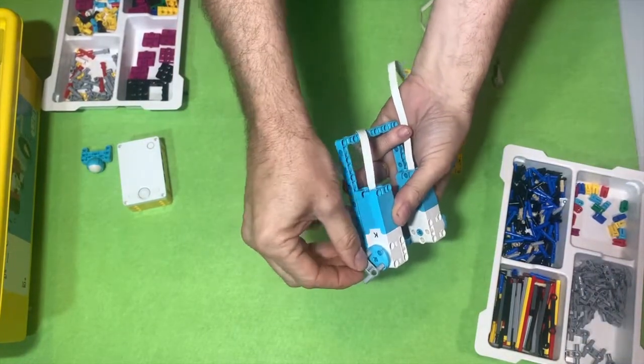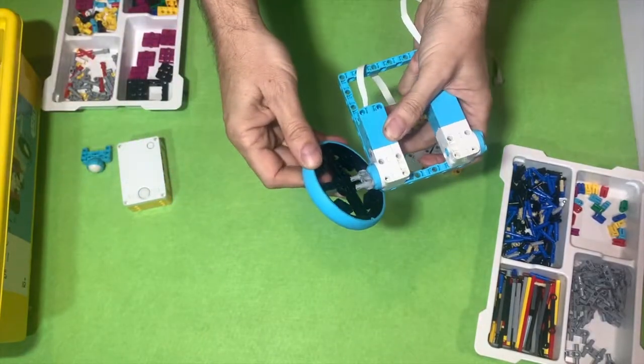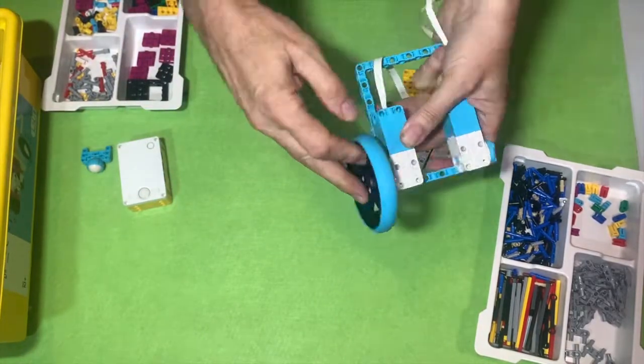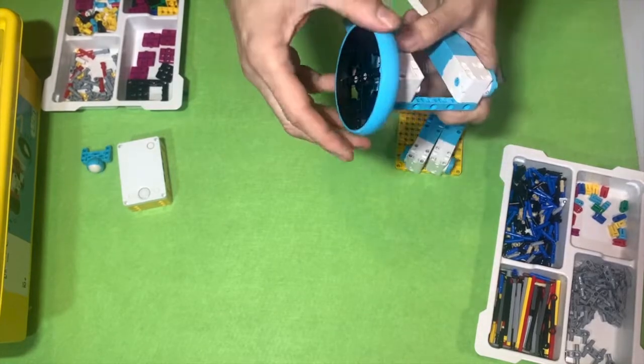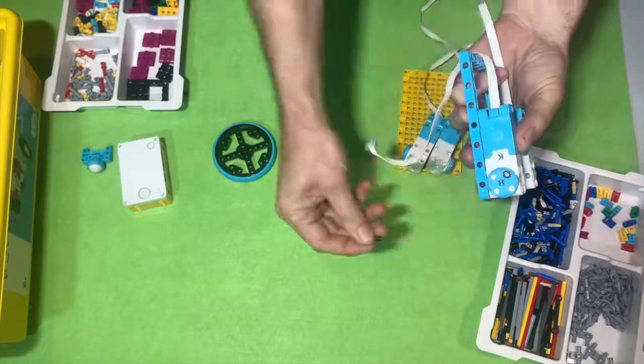You can attach the wheels using one of those grey pieces with the four prongs on it. That's not a bad way of doing it. Some people like to do that. Some people like just to attach the wheel using little black pieces.